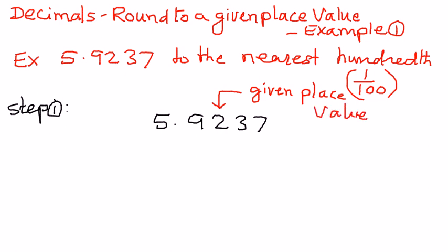Now we want to look at the number just to the right of 2, and then make a decision: if that number is equal to 5 or greater than 5, we add 1 to the given place value and make the rest of the digits 0. If the number is less than 5, we do not add 1 — we drop it and make it equal to 0. That is how we round.